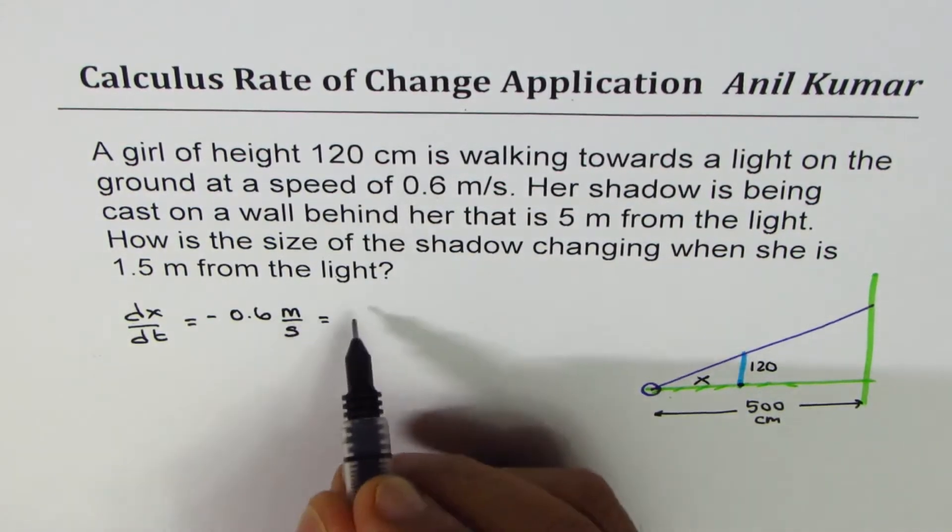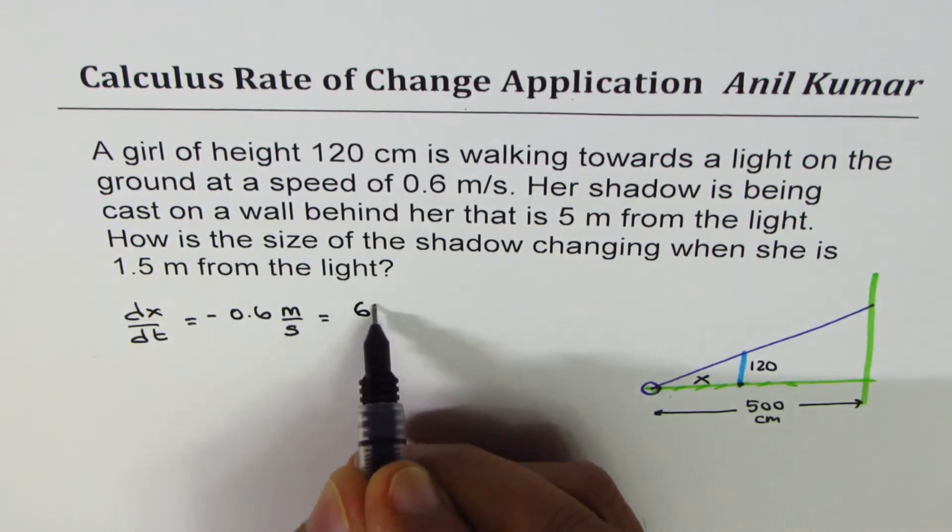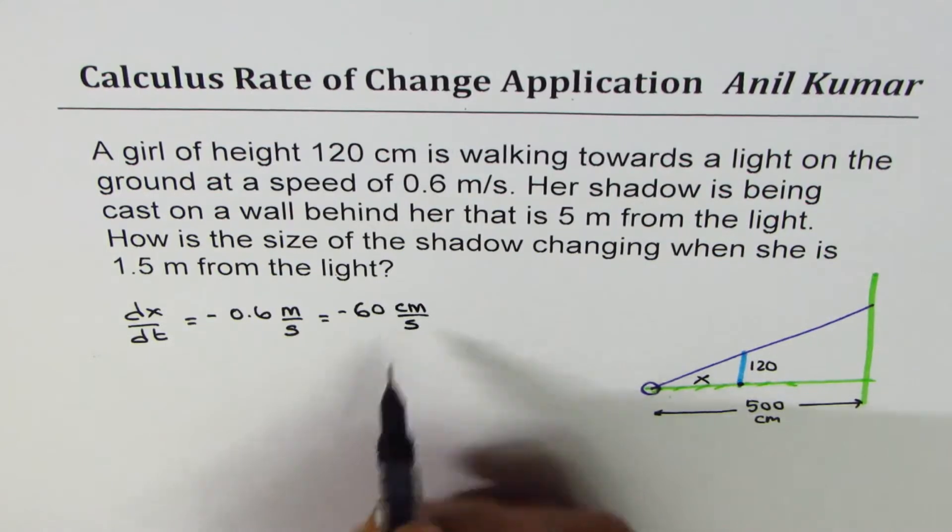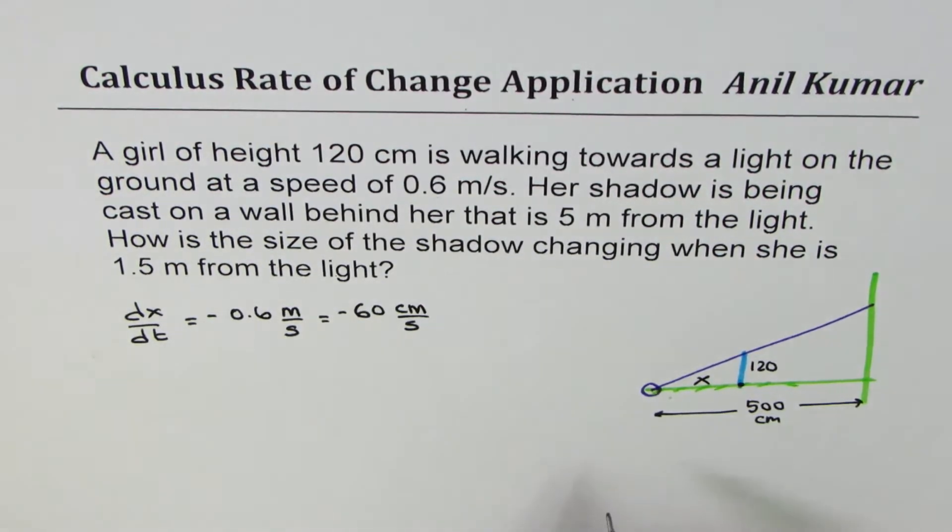Since we are taking everything in centimeters, I will multiply this by 100. So what we get here is -60 centimeters per second as dx/dt. The rate of change of position of the girl with respect to light. And that is the horizontal position.